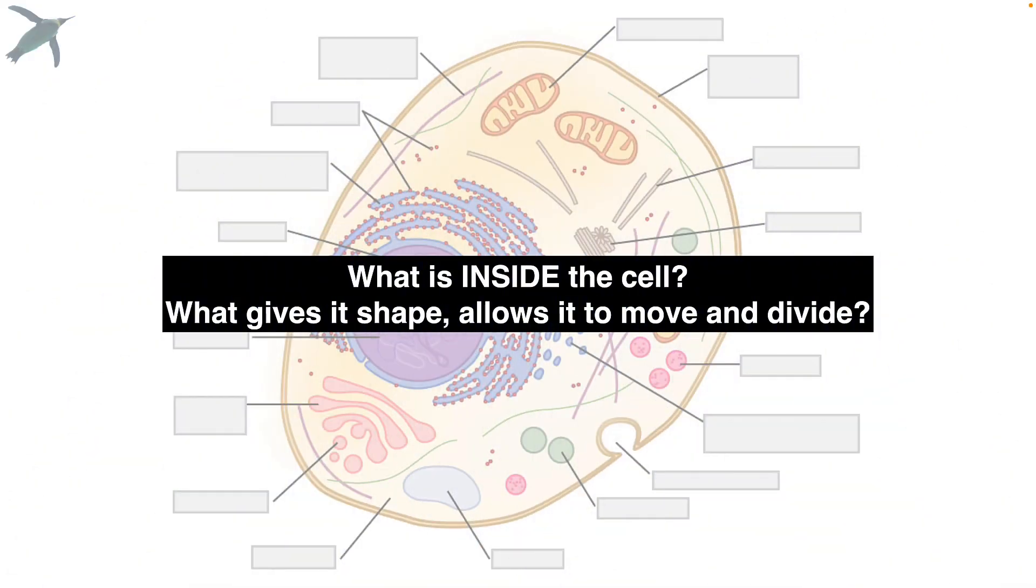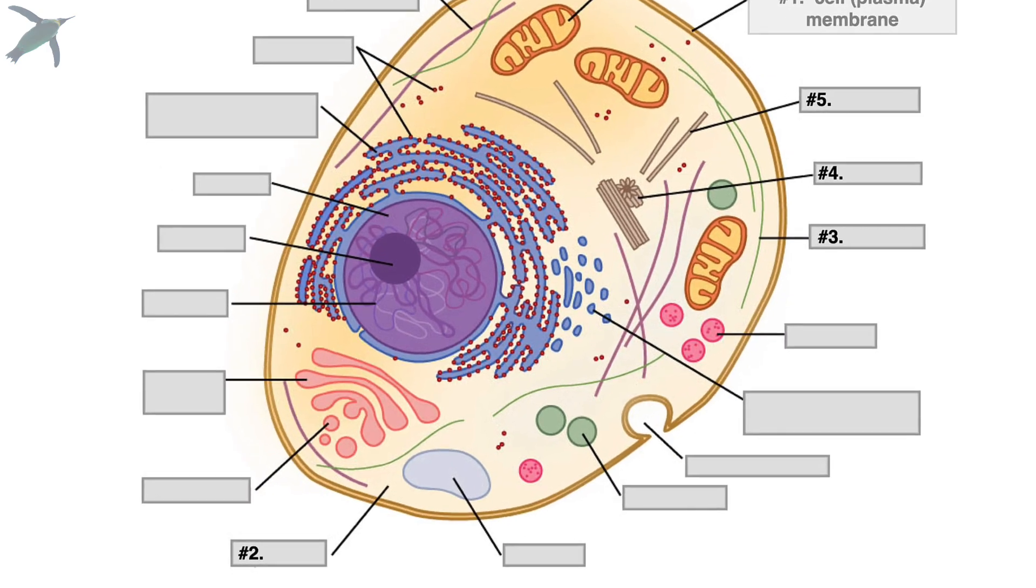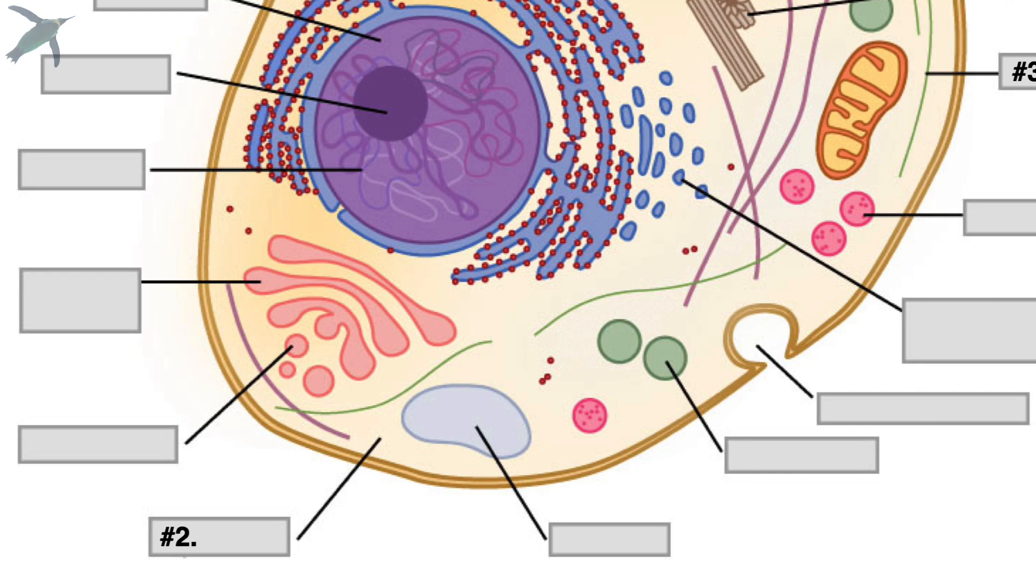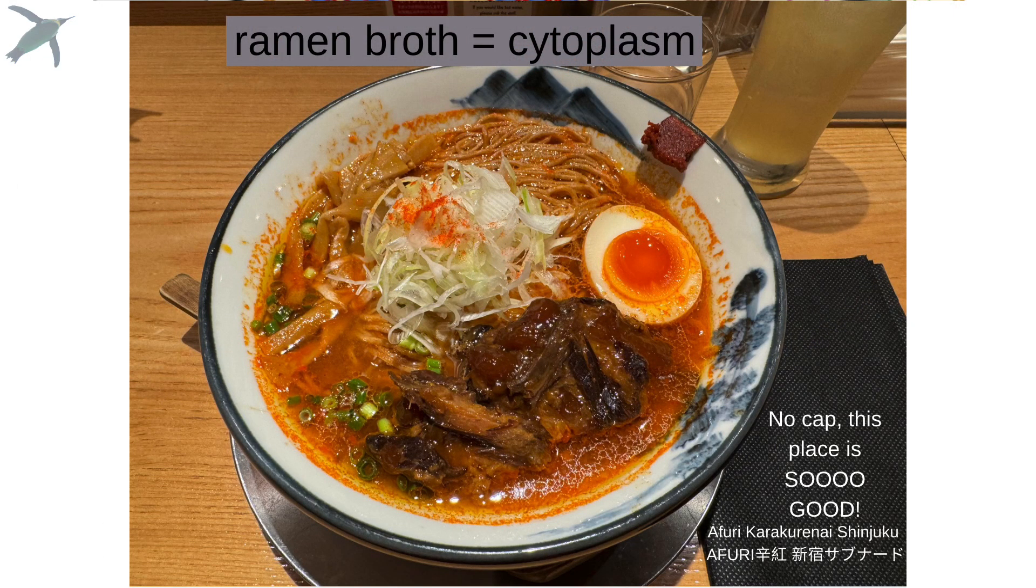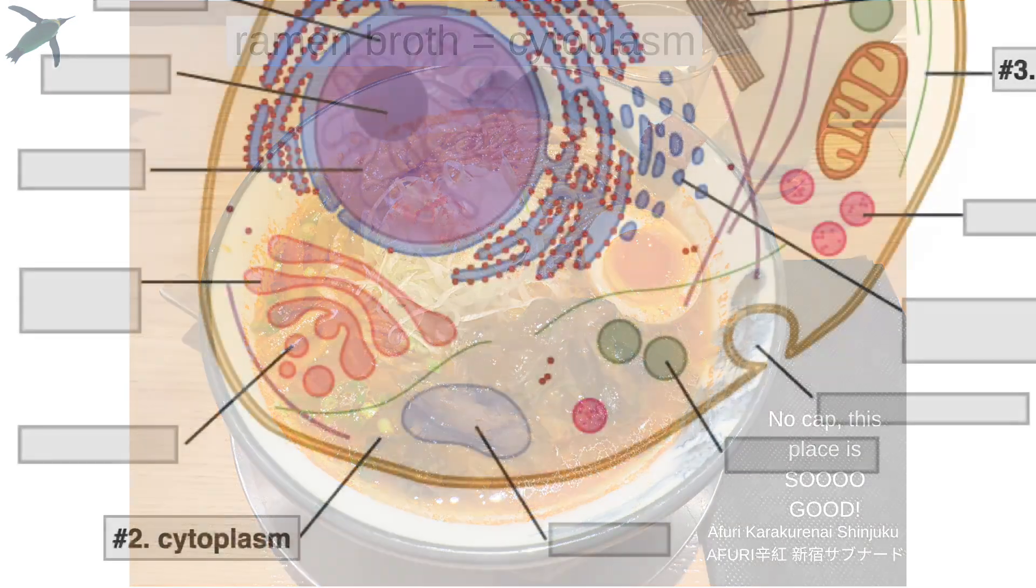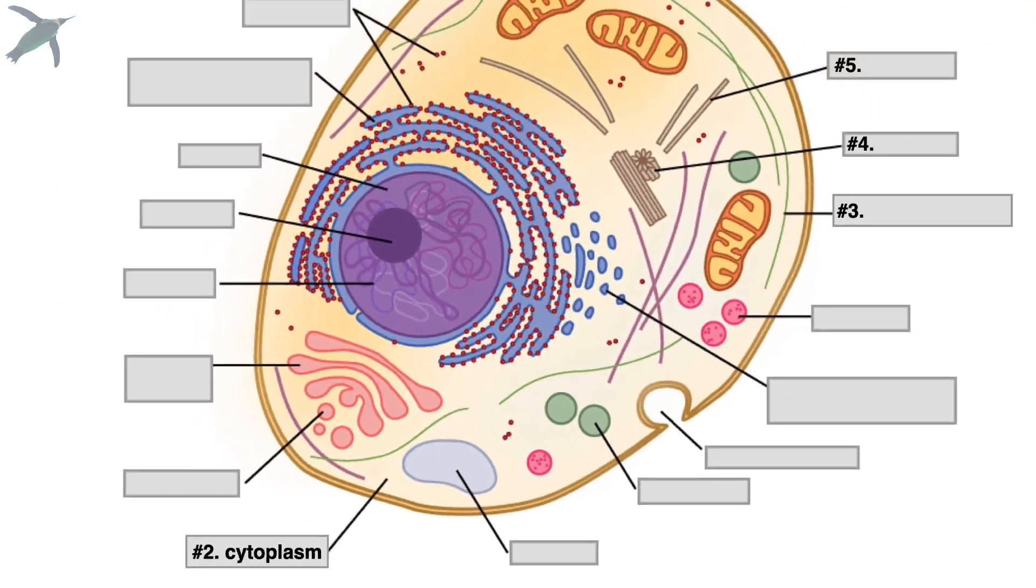Next, what is inside the cell? So what gives it shape, and what allows it to move? Okay, I know you know this one. Number two, this refers to all the yellow stuff inside the cell. What is that? It's not air. It's cytoplasm. Okay, so it's this kind of gel-like fluid. It's like the soup of the cell. That's where all the organelles are floating.